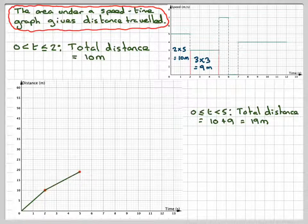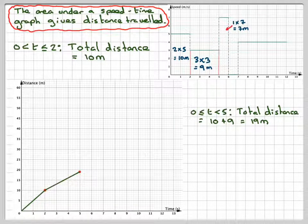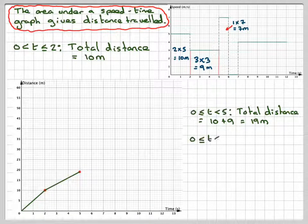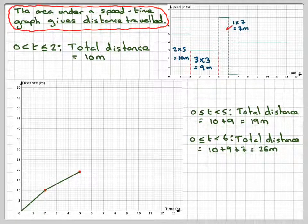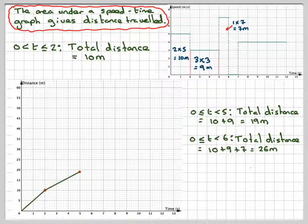In the next one second, we're going to do 1 times 7, which is 7 metres. But the total distance travelled is going to be 10 plus 9 plus 7, which is 26.